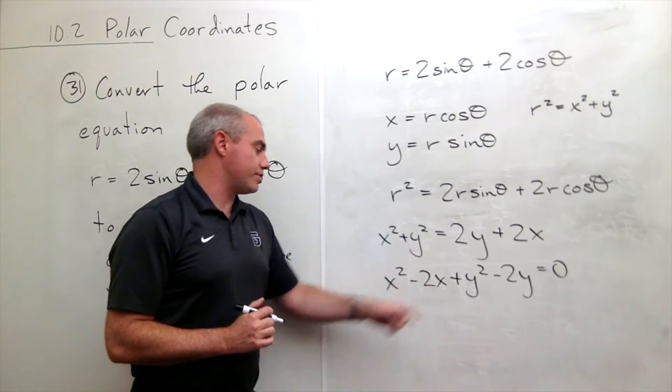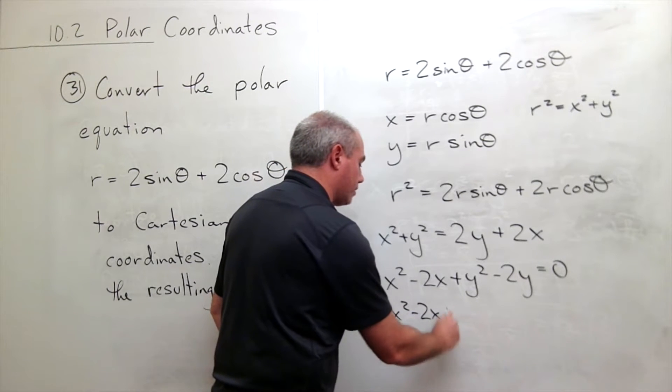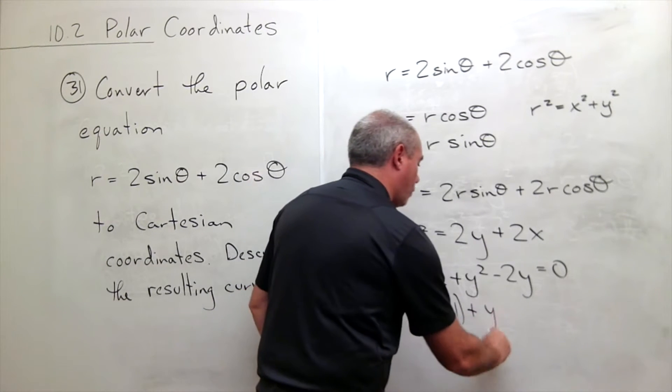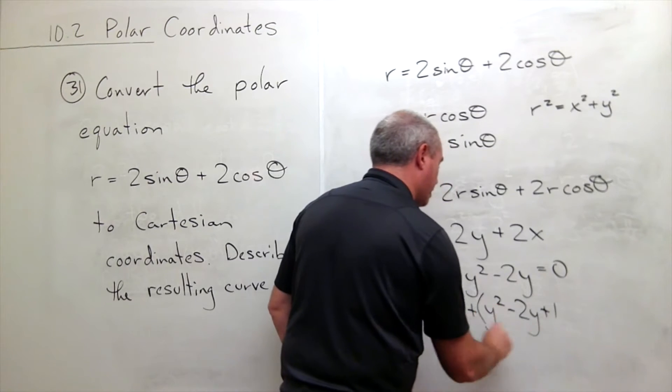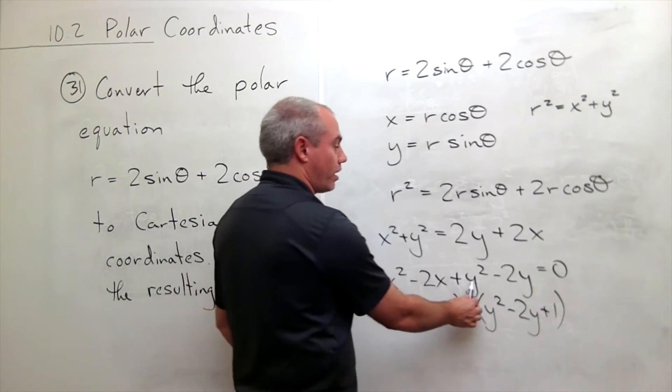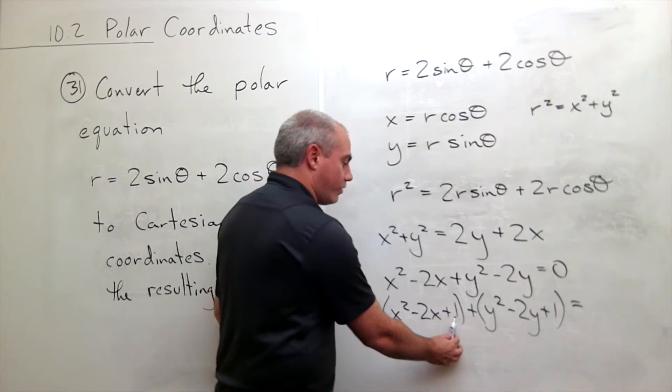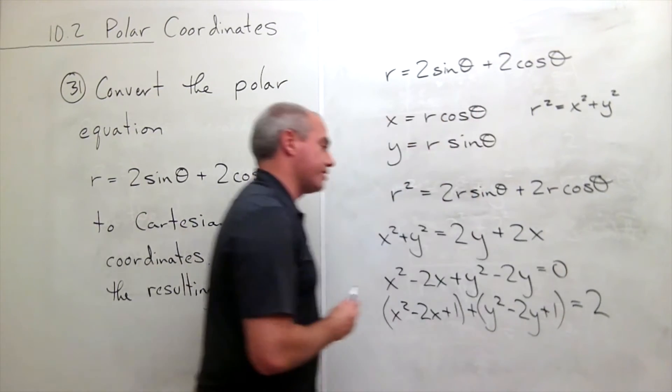x squared minus 2x, I get x squared minus 2x plus 1 plus y squared minus 2y plus an additional 1. So I completed the square on the y squared minus 2y. That is equal to, well I added 1 and 1 so I need to add 2 to the other side.